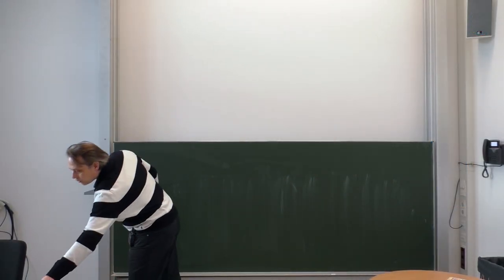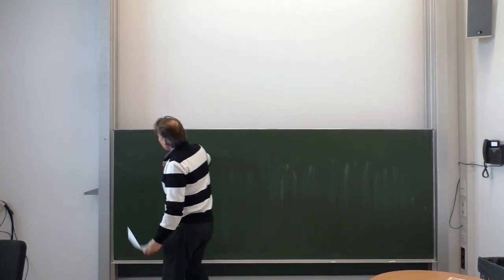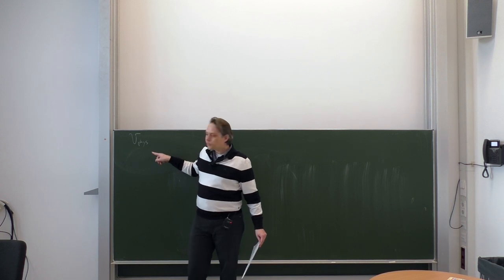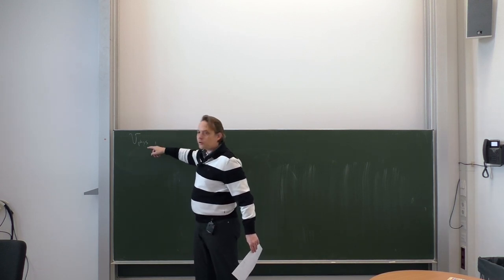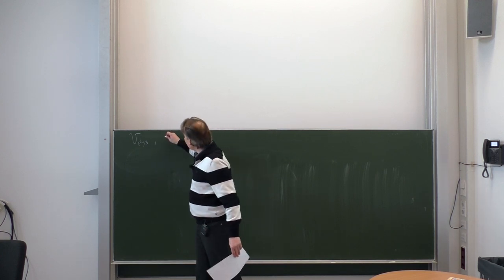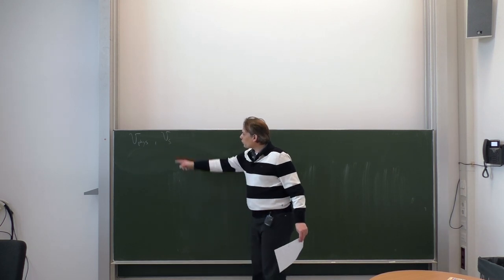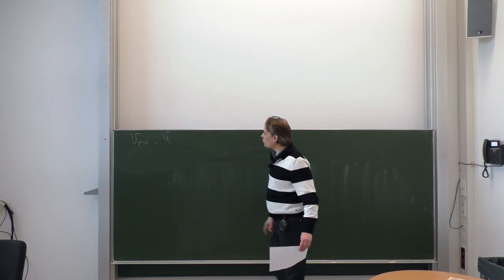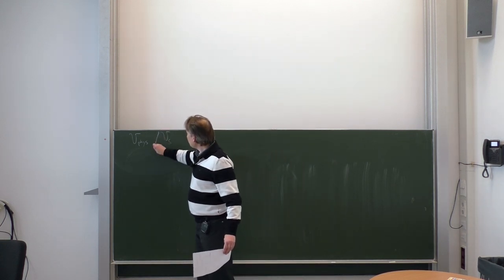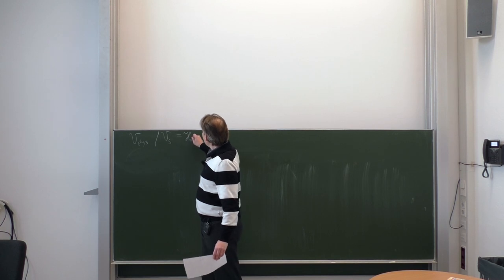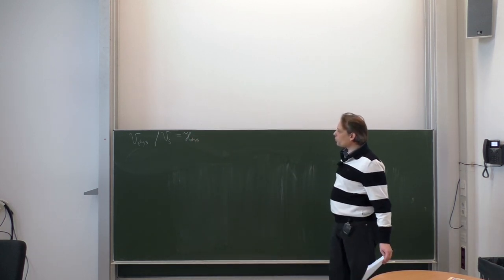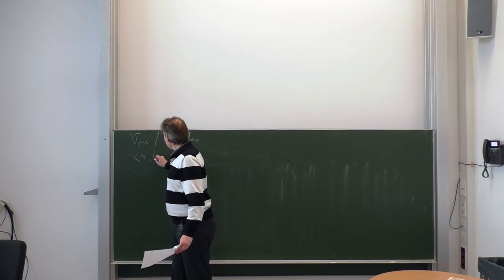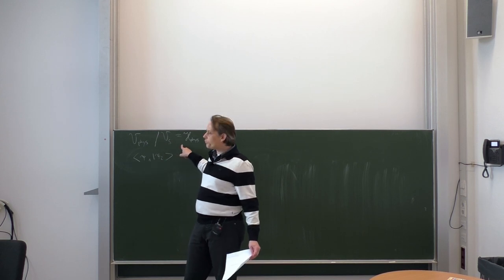Let us finish the last lecture with a few remarks. We have introduced those equivalence classes based on a space of what we call physical states. It's a physical space where all states are annihilated by the A of S annihilation operator, and we have defined a subspace of that which defines equivalence classes — all the states which have the form A dagger of S acting onto something physical. We then define the quotient space between the two, which is the physical Hilbert space, and we want to investigate the properties of this physical Hilbert space. What we already saw last time was that you can define a scalar product on that space of equivalence classes.